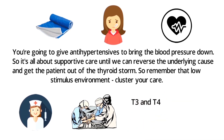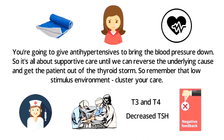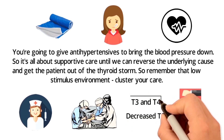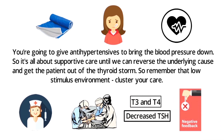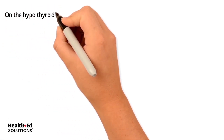Lab-wise, you're going to see elevated T3 and T4, but you'll see a decreased TSH, and that is because of negative feedback. The pituitary gets the message that there is way too much T3 and T4, so it dials back the TSH. With hyperthyroidism: elevated T3 and T4, and a low TSH.